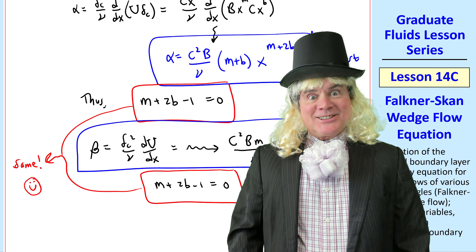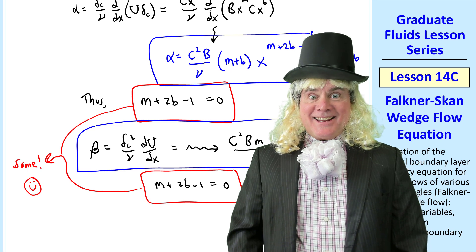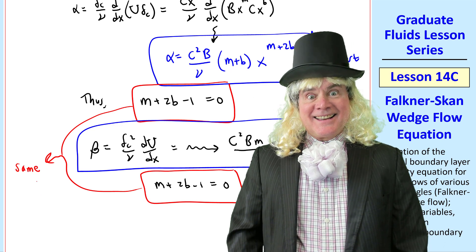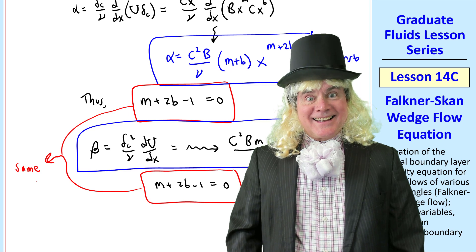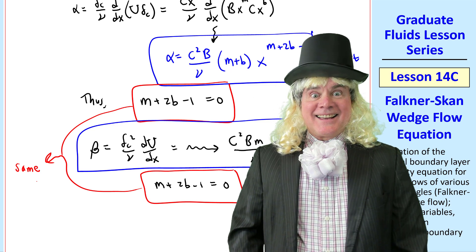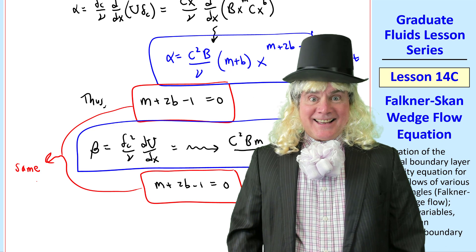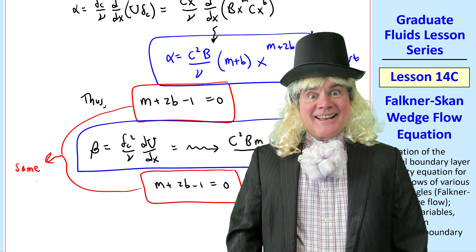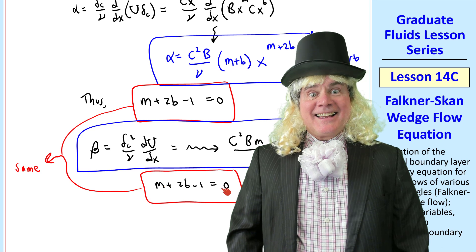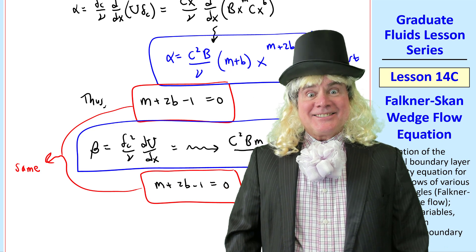Sir, what would happen if those two equations were not the same? Well, Willie, then we'd have to solve them simultaneously for m and b, and we'd be restricted to one special case. But here we can solve for arbitrary values of m and b, provided they satisfy this one equation. Excellent. Thank you, sir.